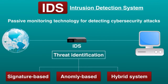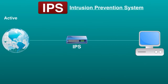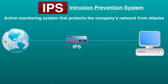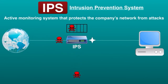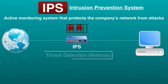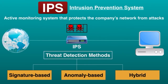IPS, or Intrusion Prevention System, is an active monitoring system that protects the company's network from malicious attacks. IPS not only raises an alert but also helps to prevent the intrusion from happening. When IPS identifies potential threats based on monitoring features of a protected host or network, it proactively takes action to stop the malicious traffic from entering the network. When IPS detects a threat, it drops the dangerous traffic or puts it in a separate place such as quarantine.